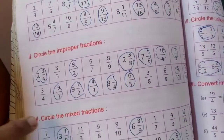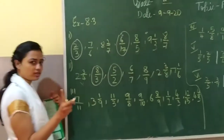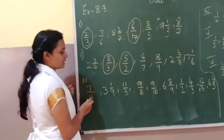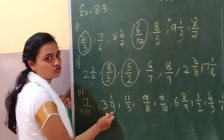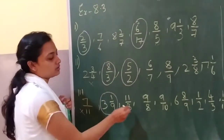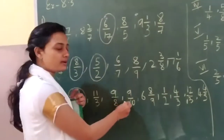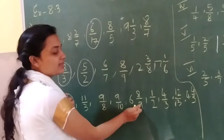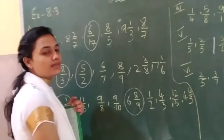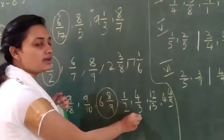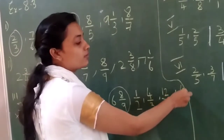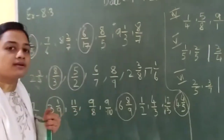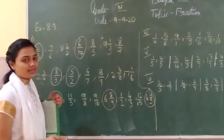Third question: circle the mixed fractions. You should have a whole number and a fraction together. Does this one have a whole number? No — not a mixed fraction. This one has a whole number with the fraction — mixed fraction. No whole number, no whole number, no whole number. This one has a whole number with a fraction, six, eight by nine — mixed fraction. One by two: no. Four by three: no. Twelve by thirty: no. Four by five — yes, it is a mixed fraction. The others you check and circle in the textbook.